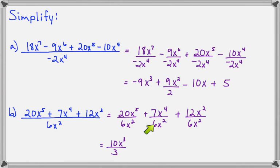On the middle term, 7 divided by 6 cannot be simplified. But, x to the 4th over x to the 2nd leaves x to the 2nd in the top. So, we'll have 7x to the 2nd over 6.